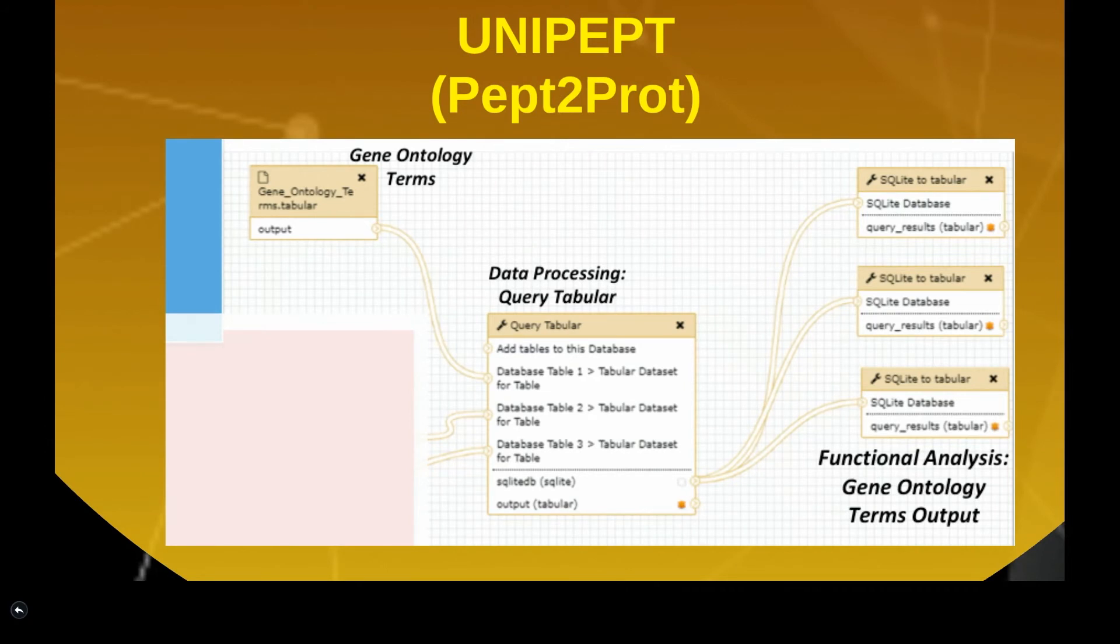The proteins are then mapped to gene ontology or GO terms, which can be used for biological interpretation.